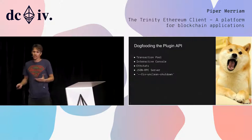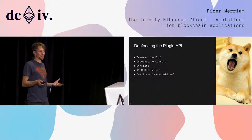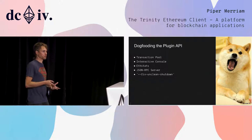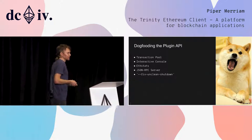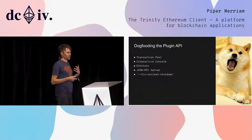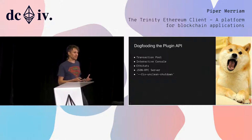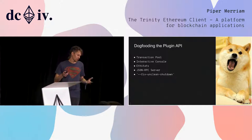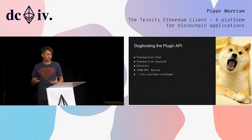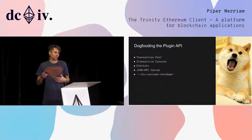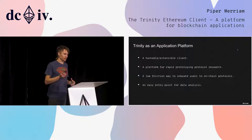We are dogfooding this API pretty heavily. We have converted a bunch of our internal things to be plugins. We are considering converting our entire synchronization to be a plugin. So this is an API that's new — it's an alpha. We got the documentation up today. I encourage you to go check it out.